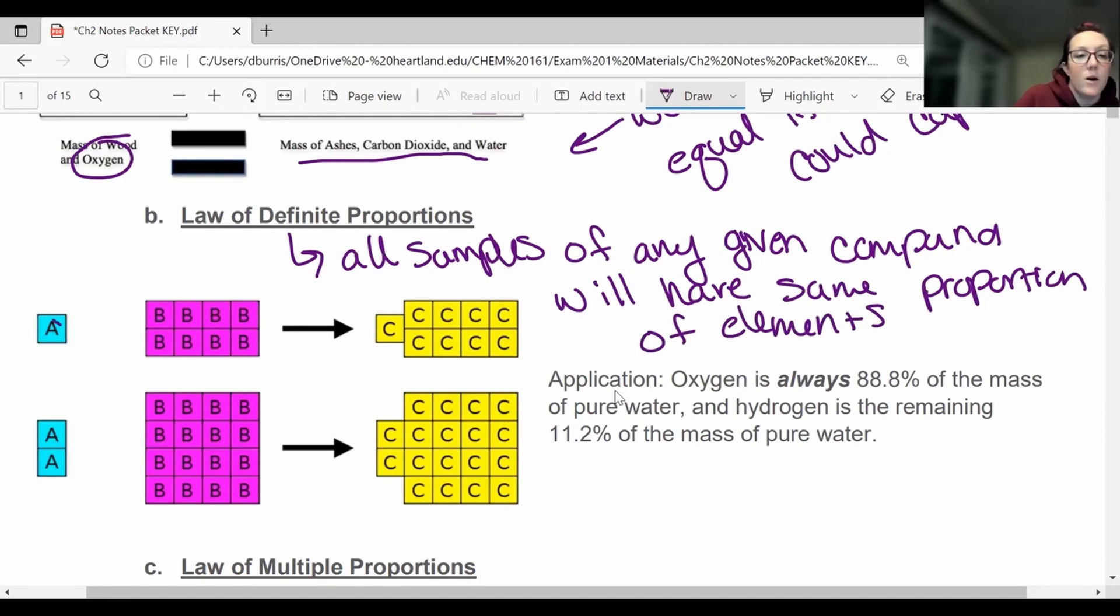Okay, so if you look at the picture example here, 1A with 8 Bs makes 9 Cs, a lot of conservation of mass. And then if I double it, then 2As would have to join with 16 Bs in order to make 18 Cs. Okay, so that's always going to be a ratio or a proportion.